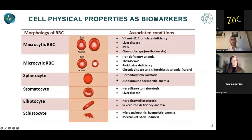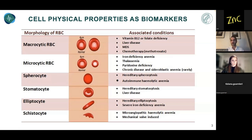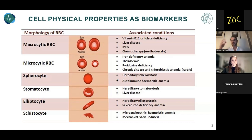This tells us that variation in cell physical properties can be associated with pathological changes, and this is already in use. For example, standard red blood cells have a characteristic biconcave shape and specific size — any variation in shape or size can be associated with a pathological condition. Taking a blood analysis is minimally invasive and easy, allowing for a first screening and initial hints for further investigation.